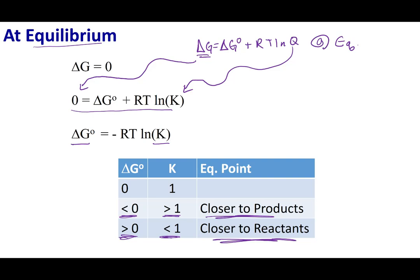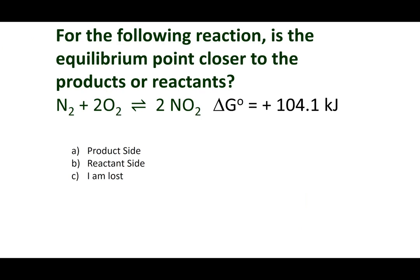So remember, large K's means that it's going to go forward in an appreciable amount. Small K's means I'm not going to break up my reactants very much. Now what I can do is I can look at delta G and make those same judgment calls. So go ahead and take a look at this and practice this out.